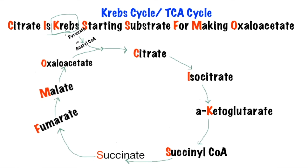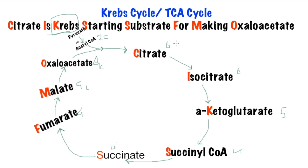One more thing we need to memorize: all the intermediates after alpha-ketoglutarate have 4 carbons, while alpha-ketoglutarate has 5 carbons, and before that — citrate and isocitrate — they have 6 carbons. So citrate has 6 carbons, isocitrate has 6 carbons, alpha-ketoglutarate has 5 carbons, and then the rest have 4 carbons each. Acetyl-CoA has 2 carbons, so that's how 4 plus 2 makes 6 carbons.